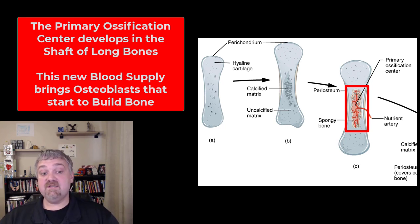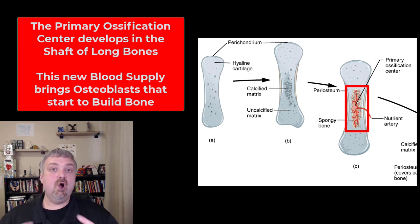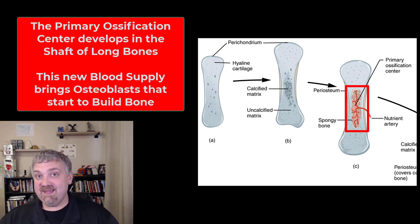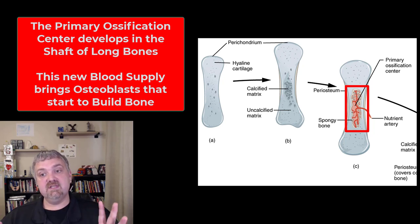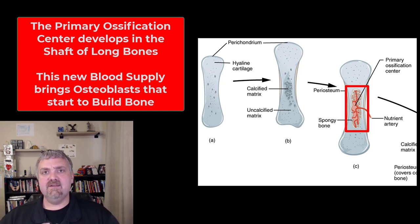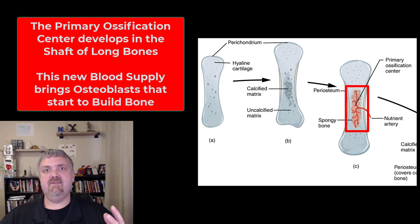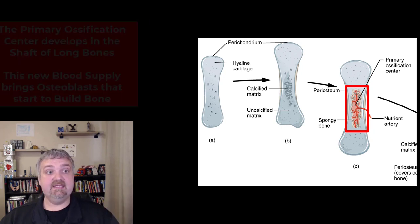That's an important term. Primary ossification centers are going to be in the shafts of your long bones. As blood vessels show up, they bring fibroblasts with them, and these fibroblasts become osteoblasts — that's where bone starts to develop. The first type of bone to develop, just like with fracture healing, is spongy bone, which then slowly becomes dense compact bone in some areas.